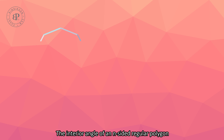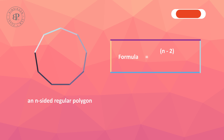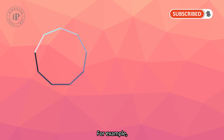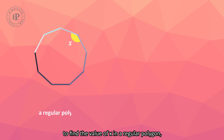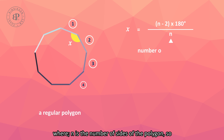The interior angle of a regular polygon can be calculated using the formula (n minus 2) times 180 over n. For example, to find the value of x in a regular polygon, we can use this formula, where n is the number of sides of the polygon.